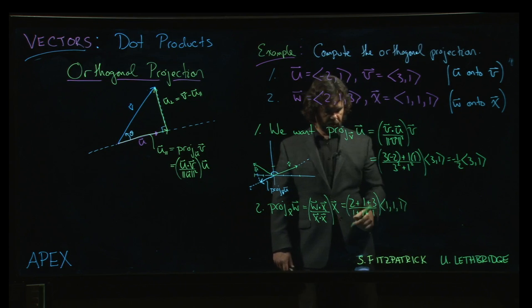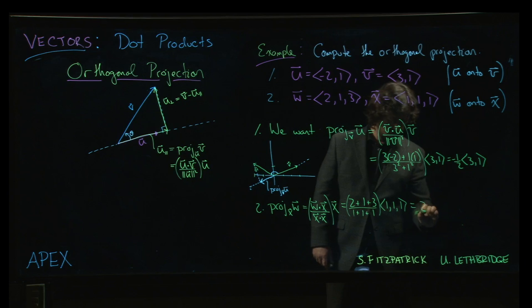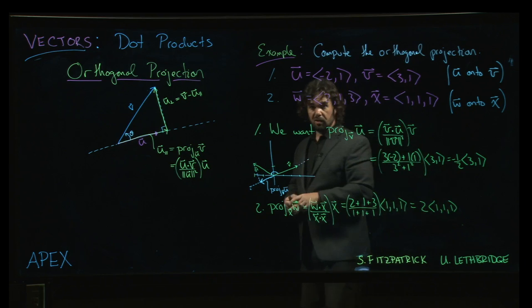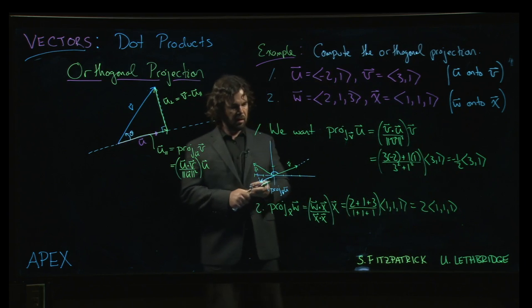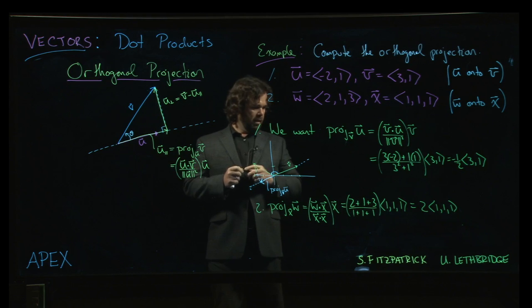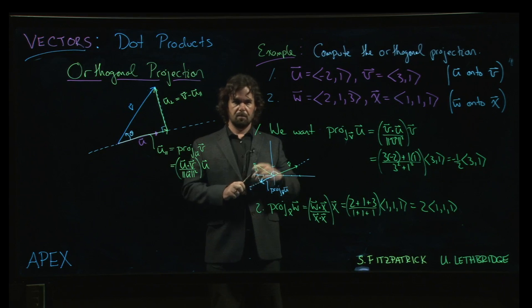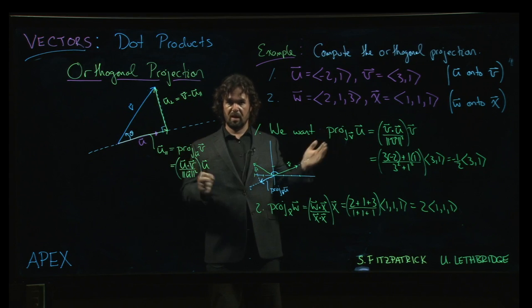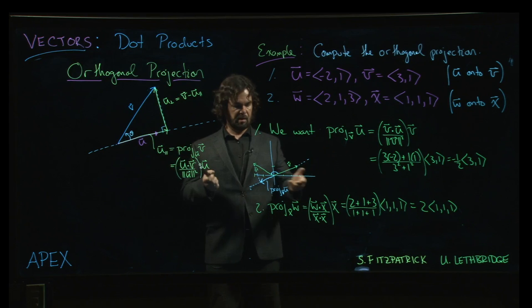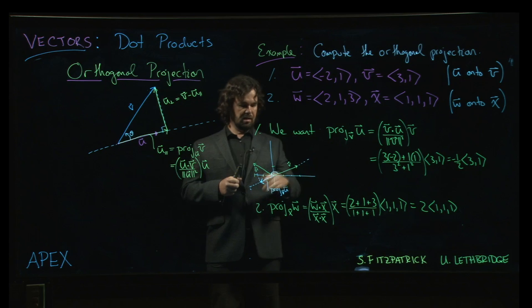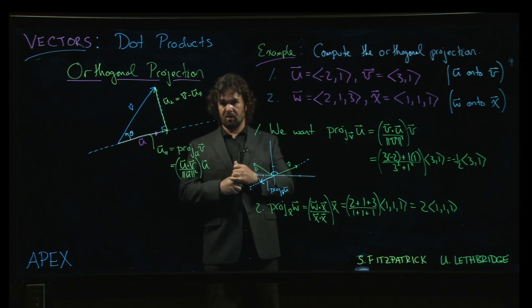And we're projecting onto x: 1, 1, 1. So that is going to be 2 times 1, 1, 1. So this time the projection is in the same direction as x and twice as long. I'm not going to try to draw it; drawing vectors in 3 dimensions is kind of a fool's errand, as we've mentioned before. You can take a look at the textbook where we have a nice 3-dimensional interactive image that you can play around with to see what those look like and confirm that that projection is indeed twice as long as the original vector.